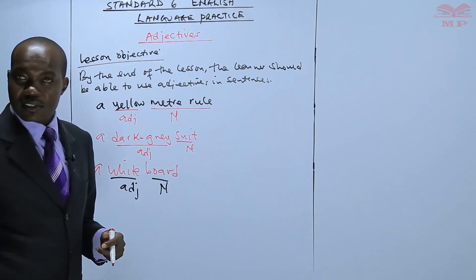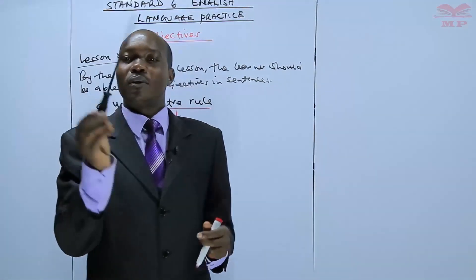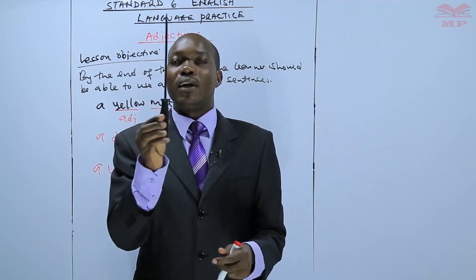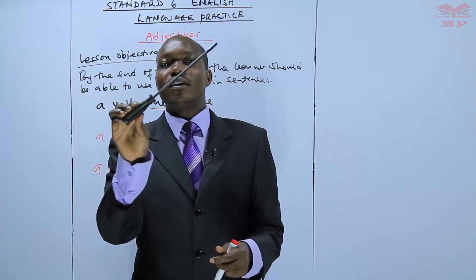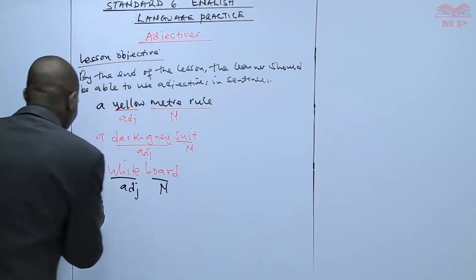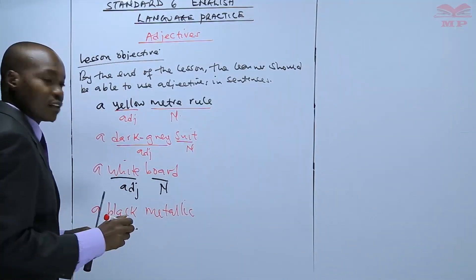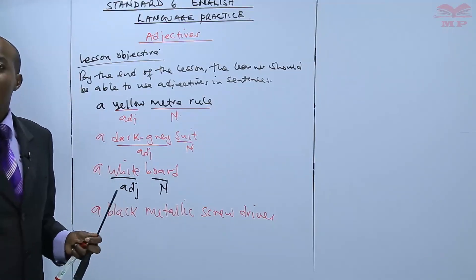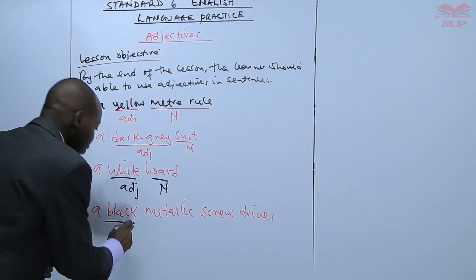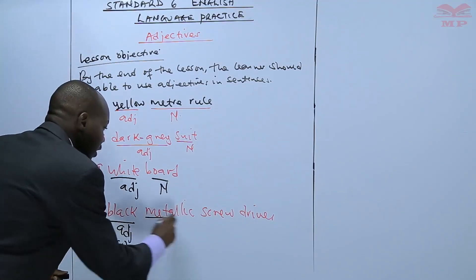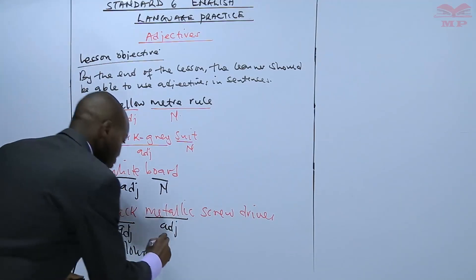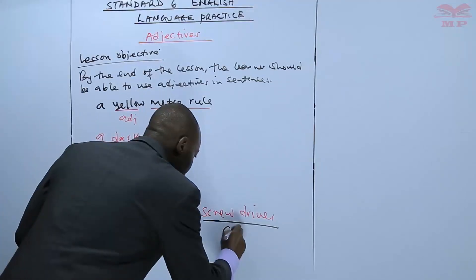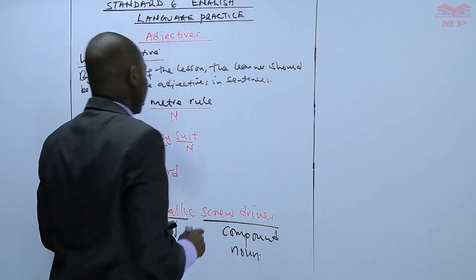Look at this — what is this? This is a screwdriver. What's the color of this screwdriver? It's black. And what's the material of this screwdriver? Metallic. So we shall say a black metallic screwdriver. The word black is an adjective talking about color, metallic is an adjective talking about material, and screwdriver is a compound noun.